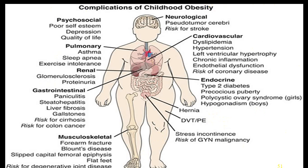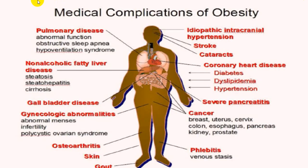In adults, complications include pulmonary disease such as obstructive sleep apnea and hypoventilation syndrome; non-alcoholic fatty liver disease progressing from steatosis to steatohepatitis and finally cirrhosis; and increased risk of gallstones and cholecystitis. In females, abnormal menstrual periods, infertility, and polycystic ovarian syndrome are common complications.